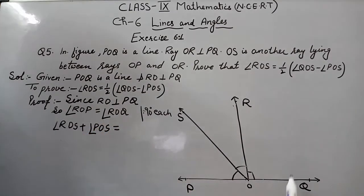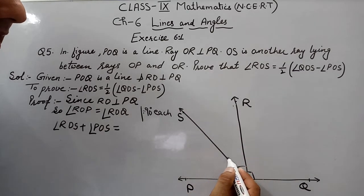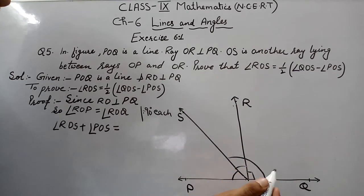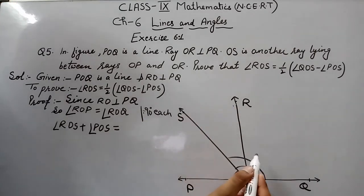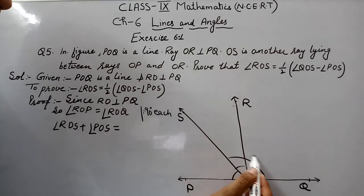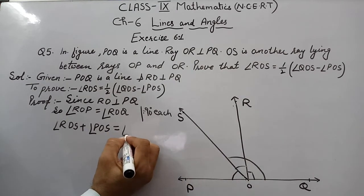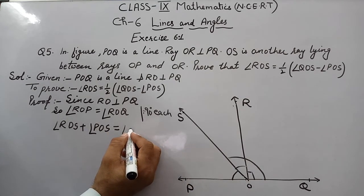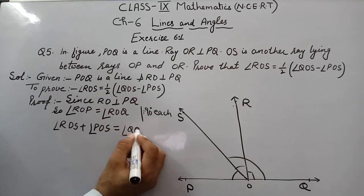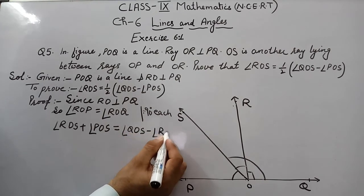So ROS plus POS is equal to ROQ. Now for ROQ, for this angle, I will write ROQ is equal to SOQ minus ROS. If I write this full angle SOQ minus ROS, so it will be this angle ROQ only. So I am writing ROQ as angle SOQ or QOS minus angle ROS.